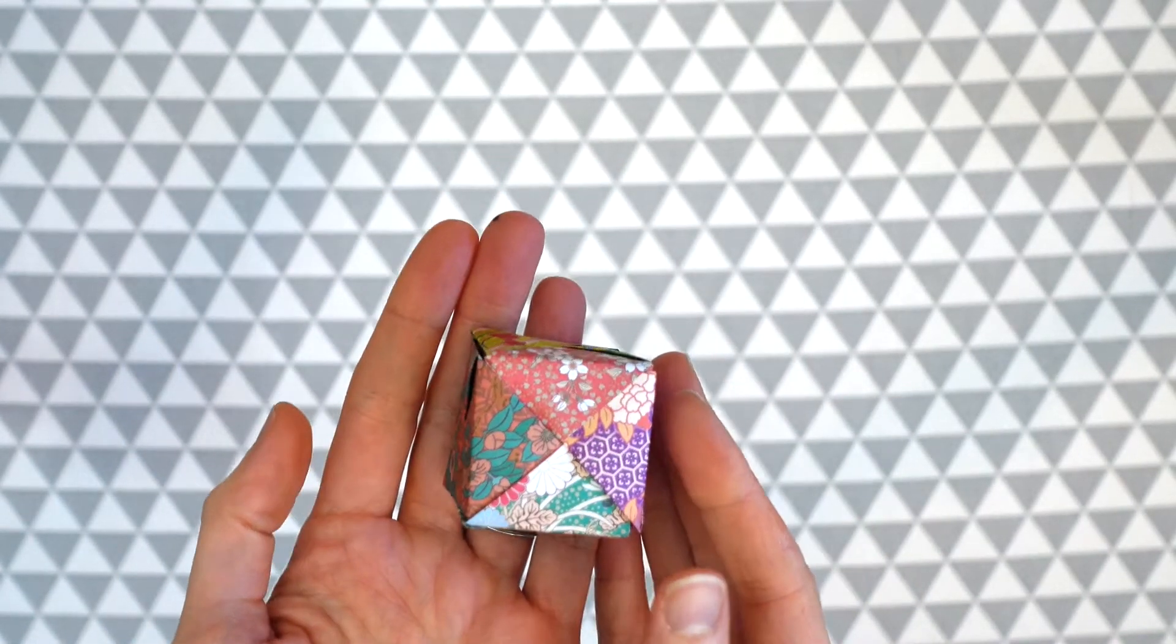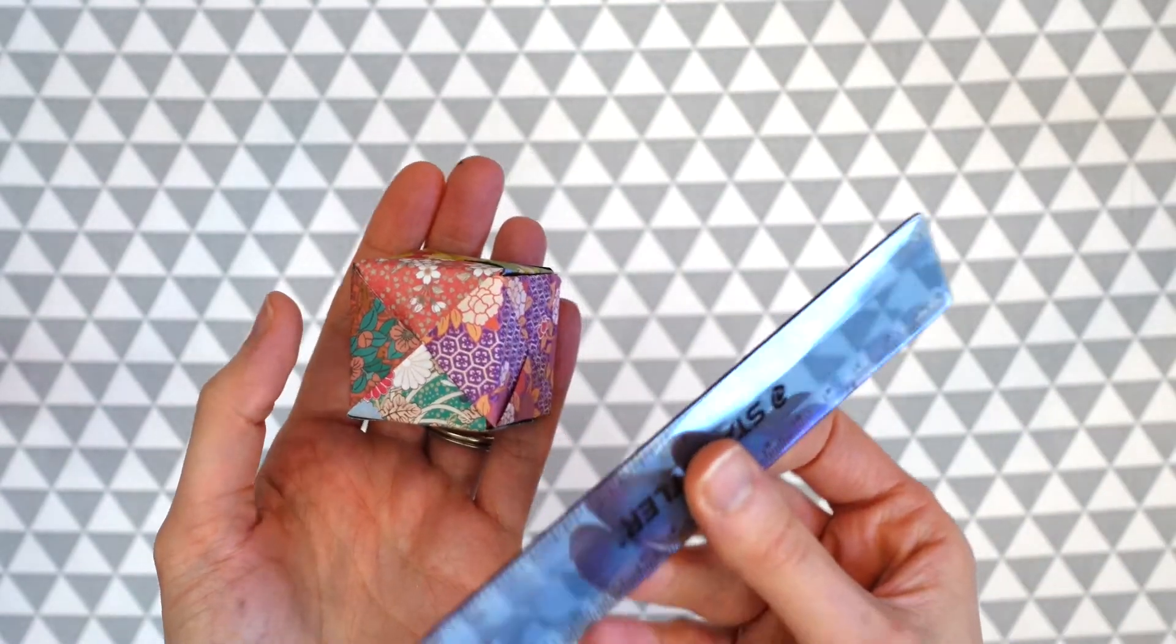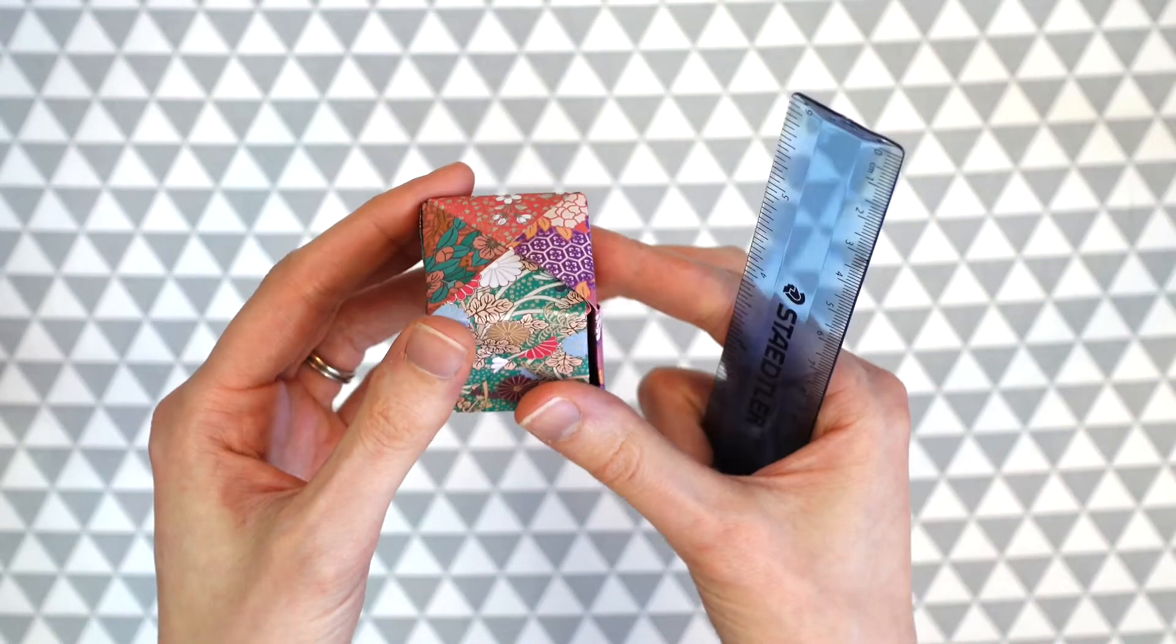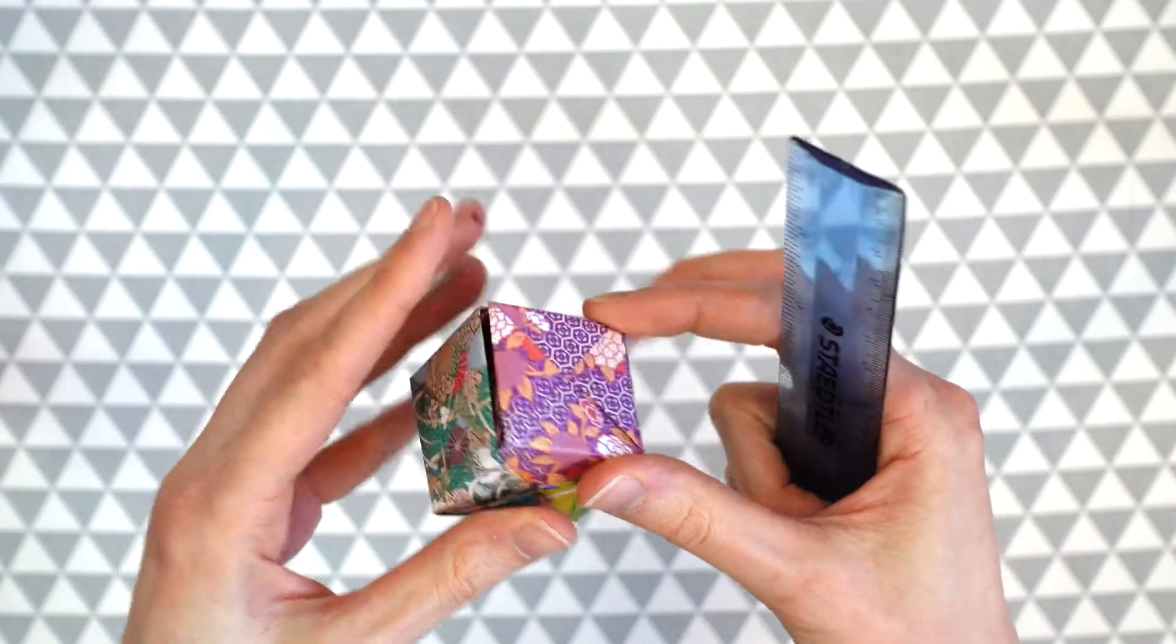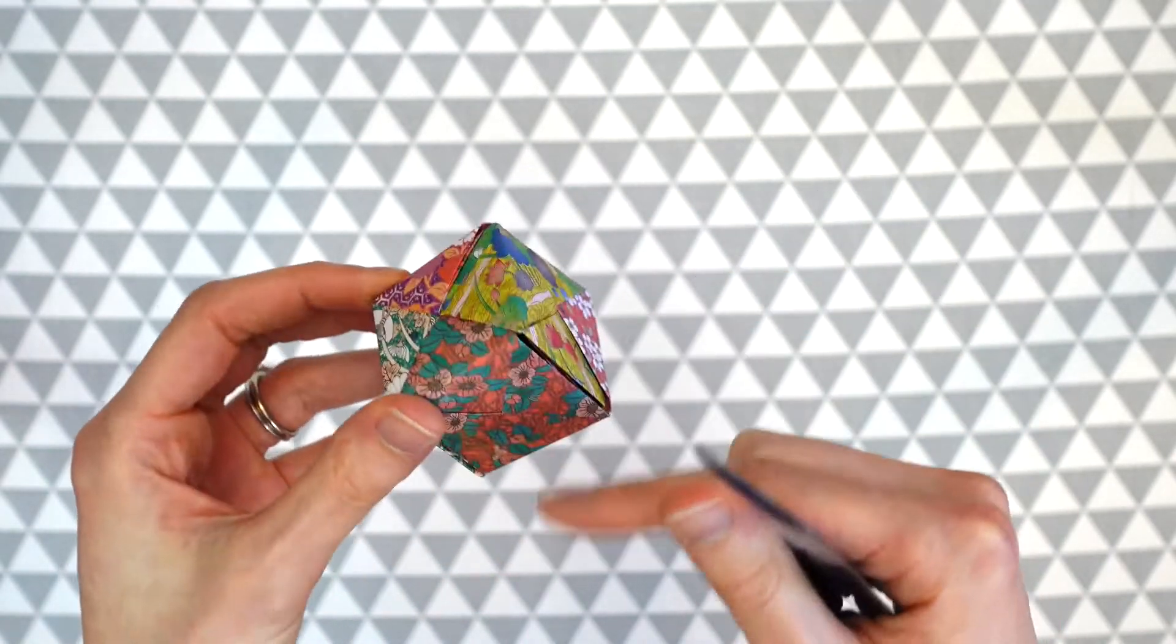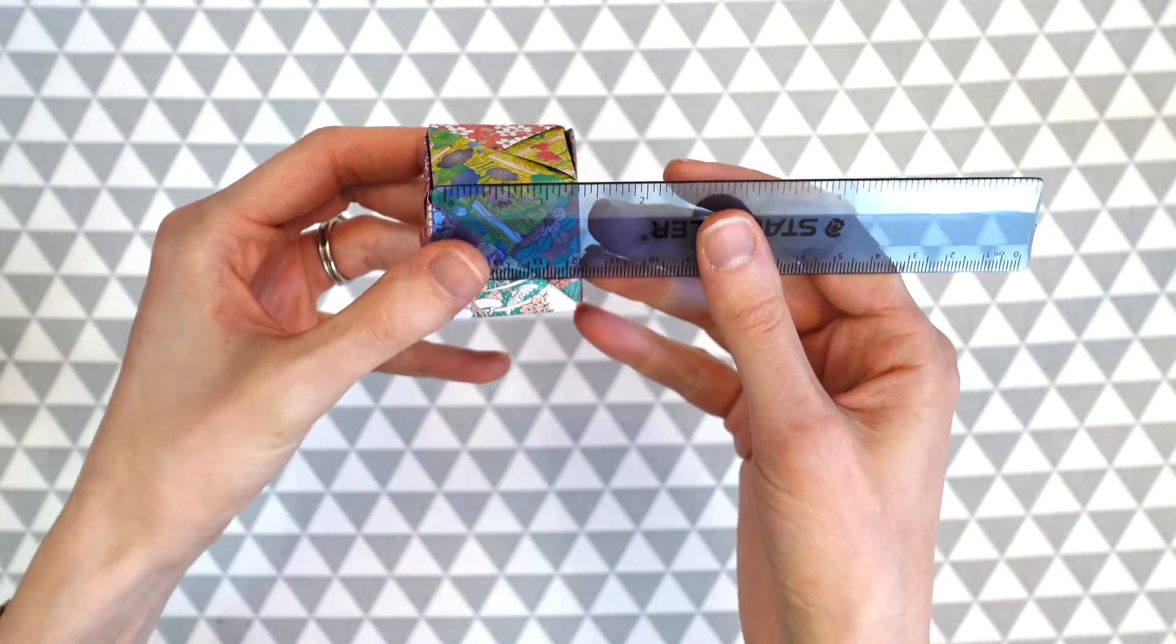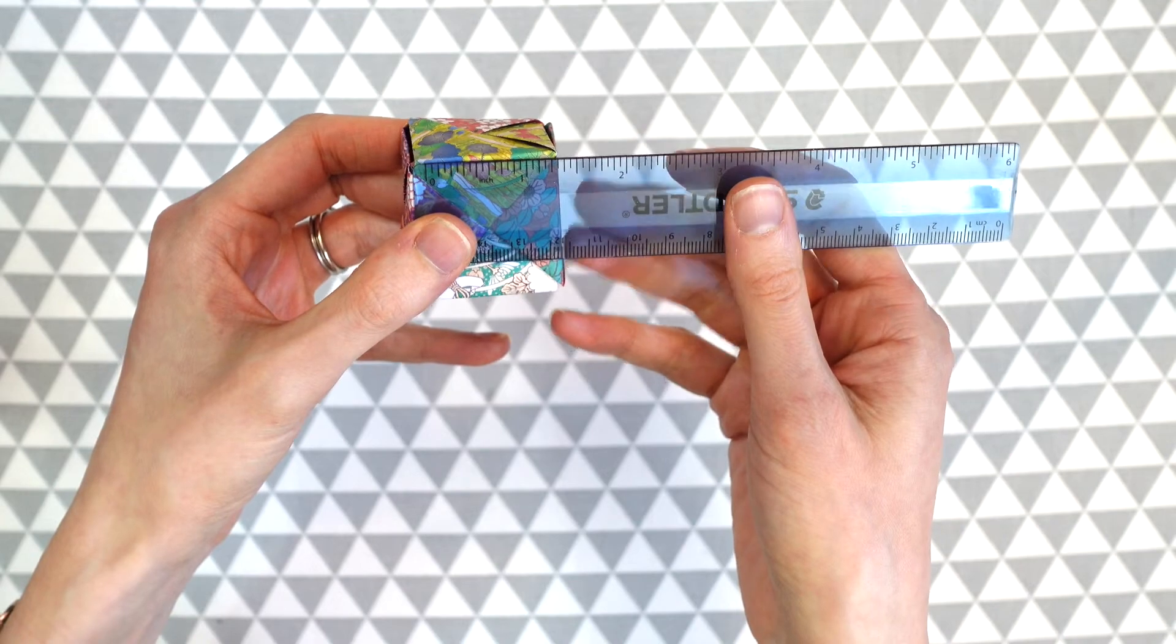So now that we have our cube we can actually find its volume. This is where we're going to take out our ruler and measure the length of our cube. The thing about cubes is that they have the same length and width on all sides.